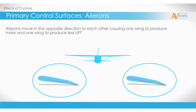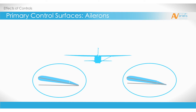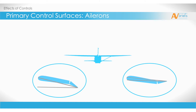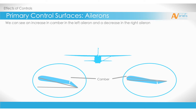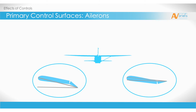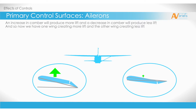This causes one wing to produce more and one wing to produce less lift. You can see the left side aileron moving downwards, creating more camber. The right side aileron is moving upwards, which reduces the camber. An increase in camber will produce more lift and a decrease in camber will produce less lift. And so now we have one wing creating more lift and the other wing creating less lift.